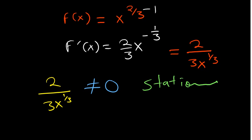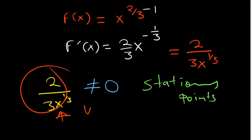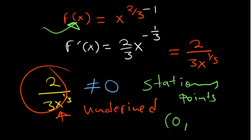However, if you plug in x = 0, the denominator becomes zero and the derivative is undefined. Where the derivative is undefined, that is referred to as a critical point. So the critical point is at x = 0. Substituting back into the original function gives 0^(2/3) = 0, so the critical point is (0, 0). This clearly differentiates critical points from stationary points.